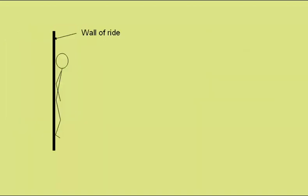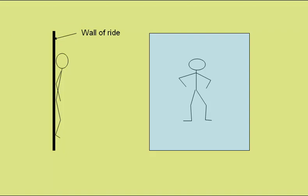This diagram shows a person pushed up against the side of the ride. From the front, the person's weight mg acts downward. As the person is not moving, the force of friction acting upward must equal the weight acting down. So we can say F equals mg.